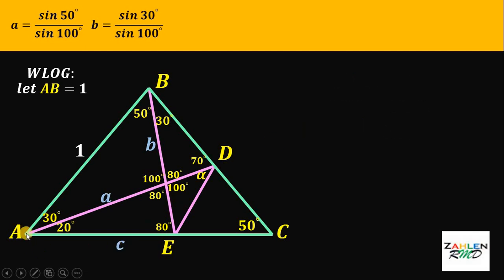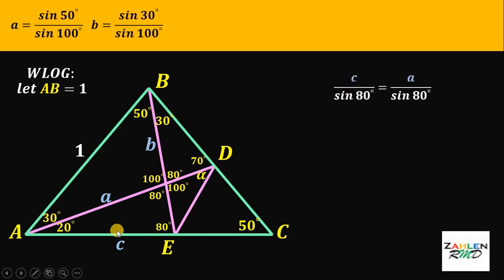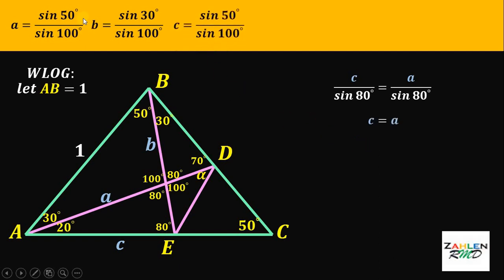Let this side be equal to c. We will use the triangle with angles 20 degrees, 80 degrees, and 80 degrees. Applying sine law: c over sine of 80 degrees equals side a over sine of 80 degrees. Note that this triangle is also an isosceles triangle. Therefore, side a equals side c, so c equals sine 50 degrees over sine of 100 degrees.